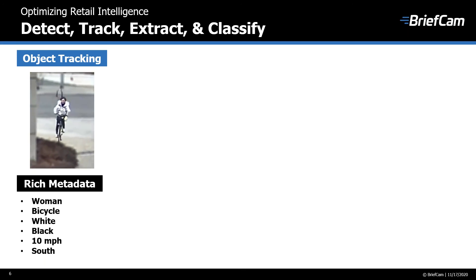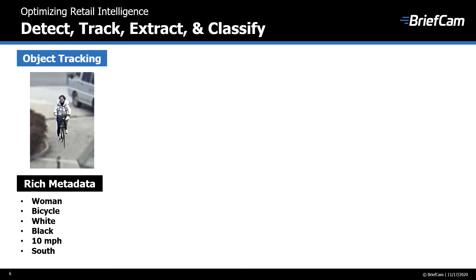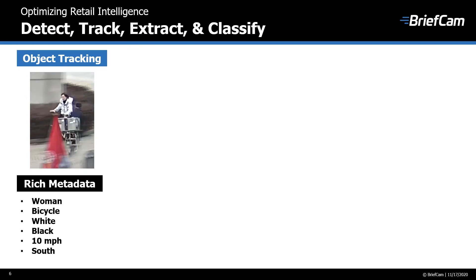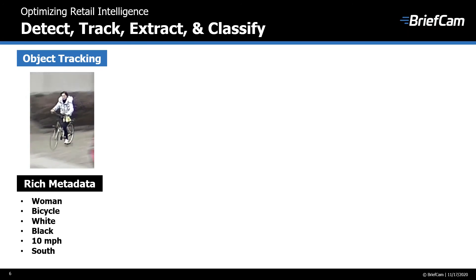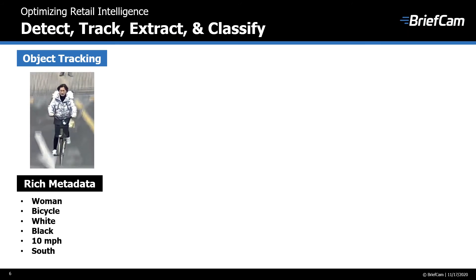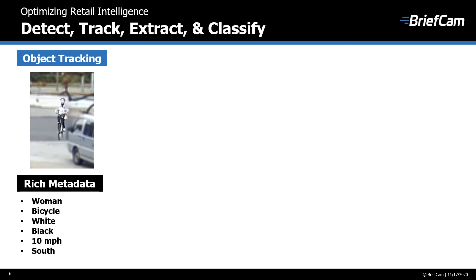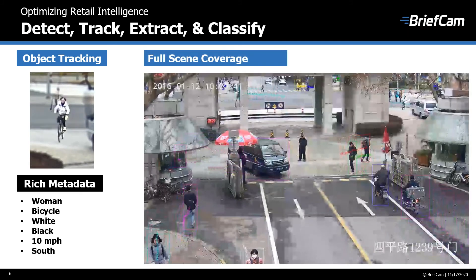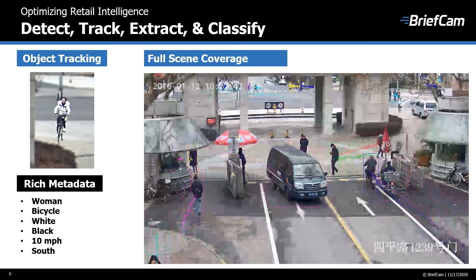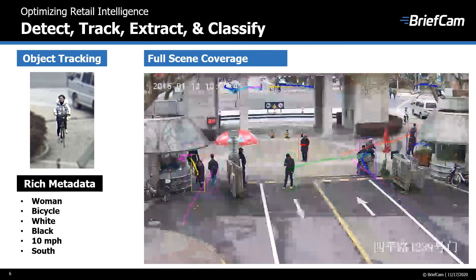For example, what most would see here is a woman on a bike. However, from a BriefCam perspective, what the engine sees is a woman on a bike, wearing a white top, black pants, traveling 10 miles an hour south. If we look at the full scene coverage, we see our woman on a bike coming down the right-hand corner of the scene, but we also see the other objects that BriefCam is detecting and extracting metadata from, so we can easily search for objects or people of interest.